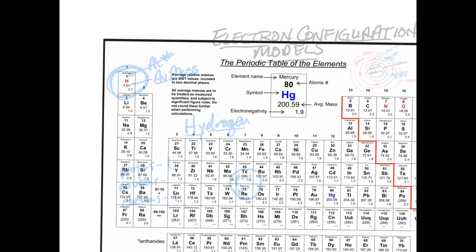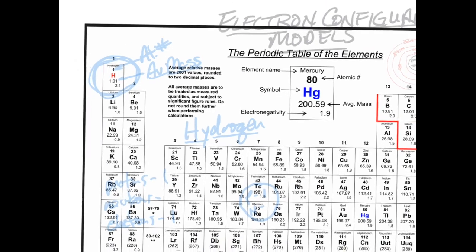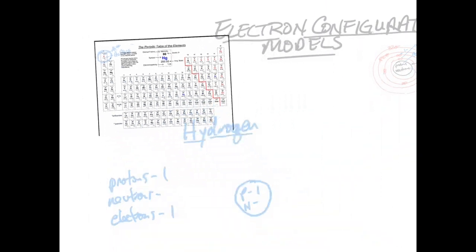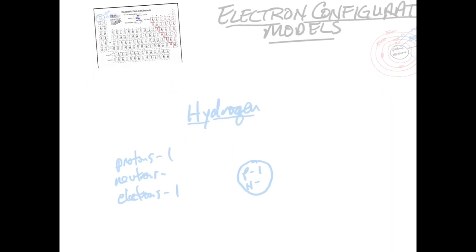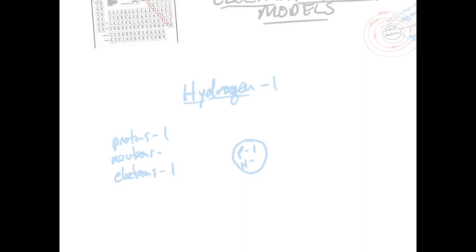We write that as hydrogen-1, sometimes written H-1. That tells you the mass is 1. Since we already have one proton accounting for 1 amu, that means in this isotope of hydrogen there are no neutrons. There is one electron to place around the outside of the nucleus — we draw one energy level and place one electron on it.